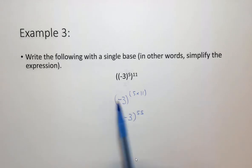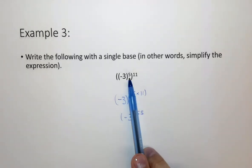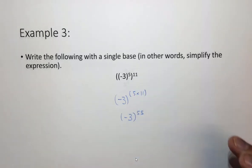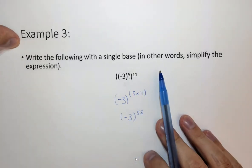So again when you're multiplying exponents you add them, when you're dividing you subtract. If you're raising one exponent to another you actually multiply them. So in this case it's minus 3 to the 55.